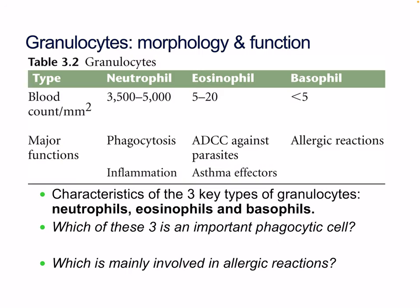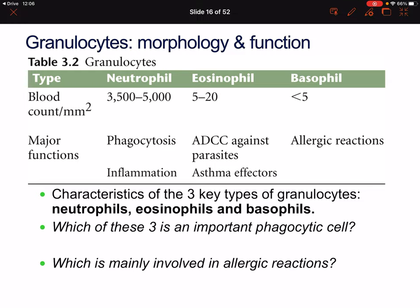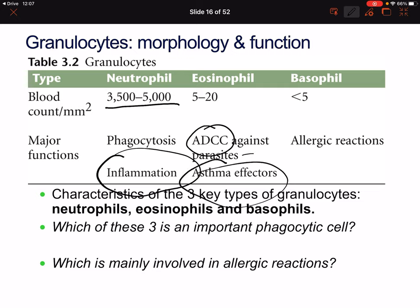Neutrophils are the most numerous white blood cells and are key in phagocytosis and inflammation — they are the first responders. Eosinophils are involved in antibody-dependent cellular cytotoxicity (ADCC) against parasites, and are also implicated in asthma, making them highly researched in asthma studies. Basophils are similarly involved in allergic reactions.